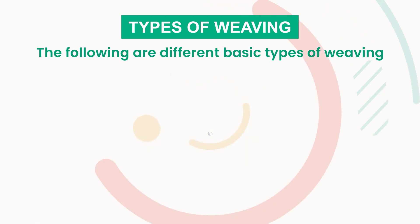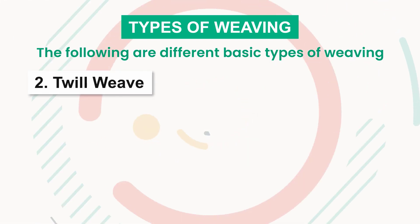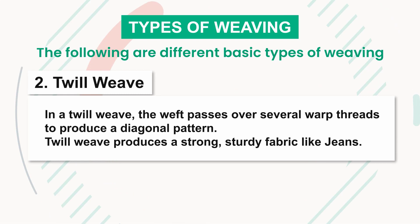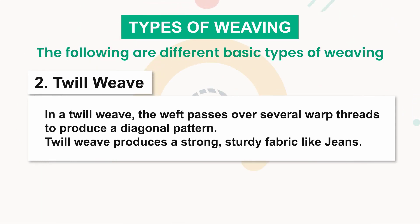Number two: twill weave. In a twill weave, the weft passes over several warp threads to produce a diagonal pattern. Twill weave produces a strong, sturdy fabric like jeans.